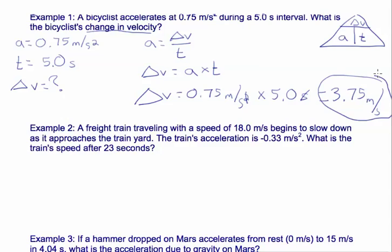This doesn't mean that our bicyclist was going 3.75 meters per second after those five seconds. It just means he was going that much faster because he had that much of a change in velocity.